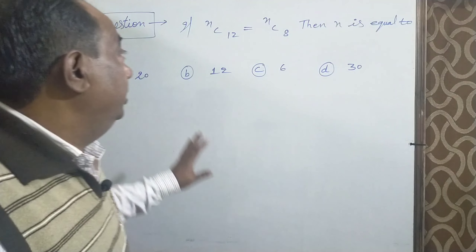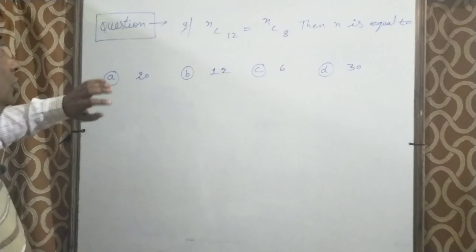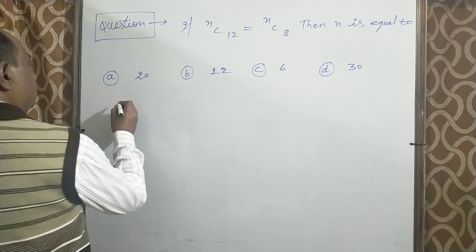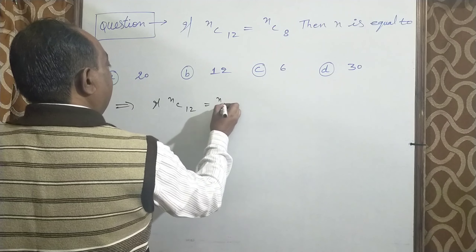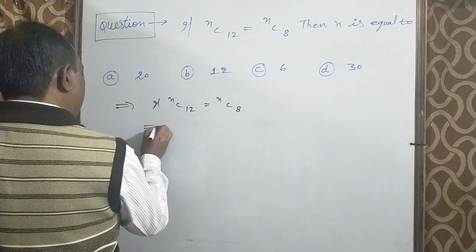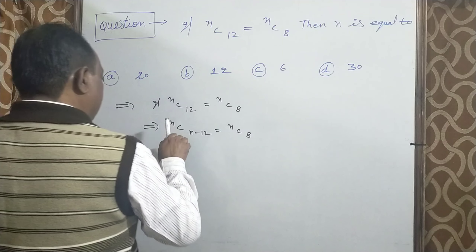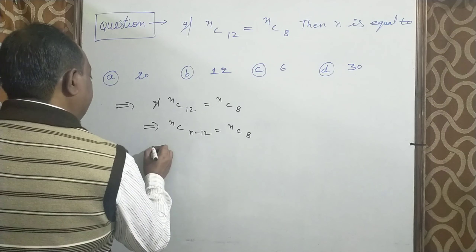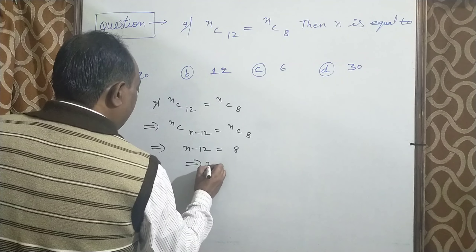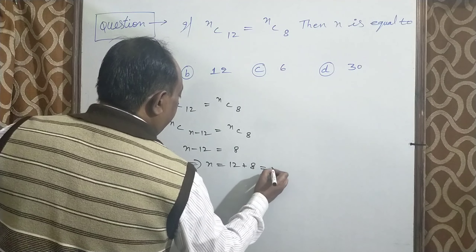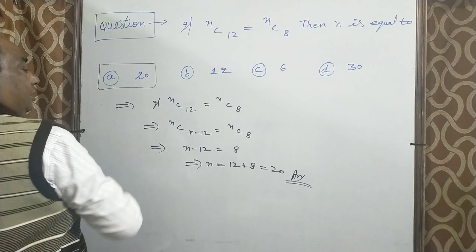Next question: if NCR12 equal NCR8, then N is equal to? Formula के according NCR12 equal NCR8, N equal होने पर equating: N minus 12 equal 8, तो N की value 12 plus 8 यानि 20 है। तो N की value 20 है, जो कि A option correct है।